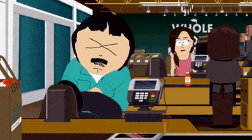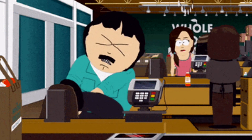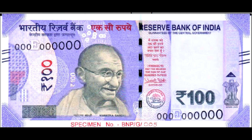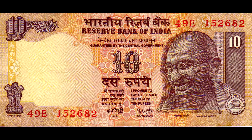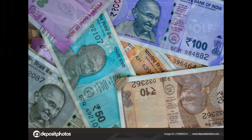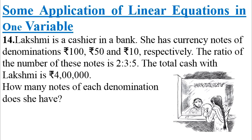उसके पास नगदी के रूप में 100 रुपए, 50 रुपए और 10 रुपए वाले notes हैं और उनकी संख्याओं में 2:3:5 का अनुपात है और उनका कुल मूल्य 4,00,000 रुपए है। उसके पास प्रत्येक प्रकार के कितने-कितने notes हैं?